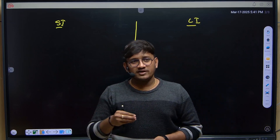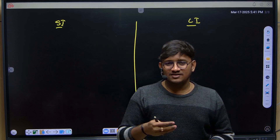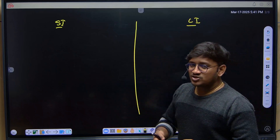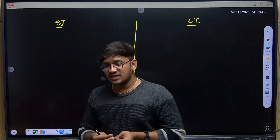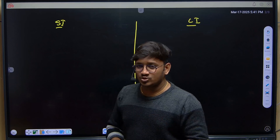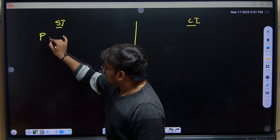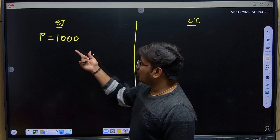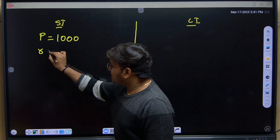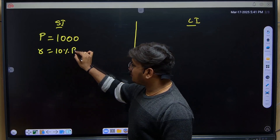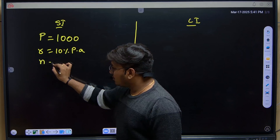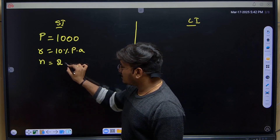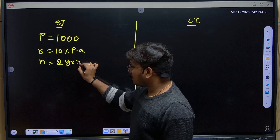Students might have memorized formulas like simple interest means PTR by 100, and compound interest means P into (1 + R/100) to the power N. I will also give you a few shortcuts to calculate without using these formulas. The key terms are: principal amount, rate of interest, and time period — T or N, where T means time period and N means number of years. Both are the same.